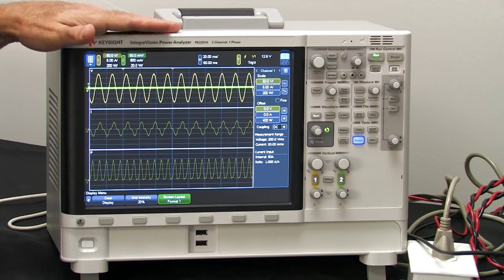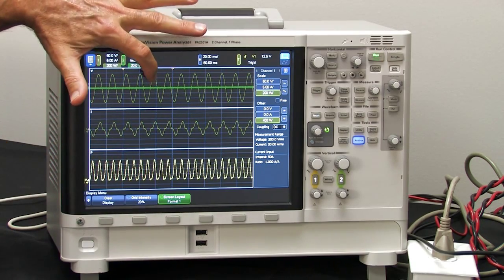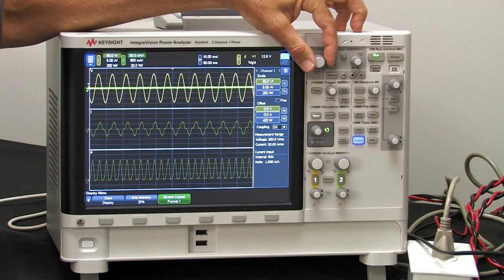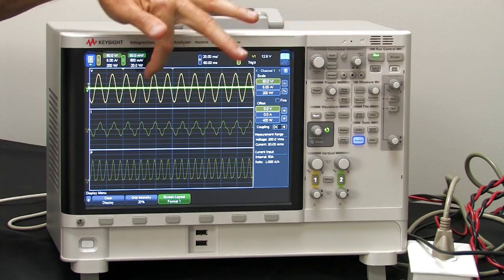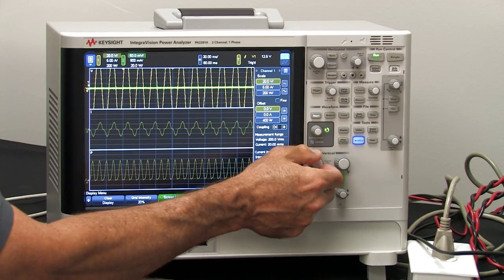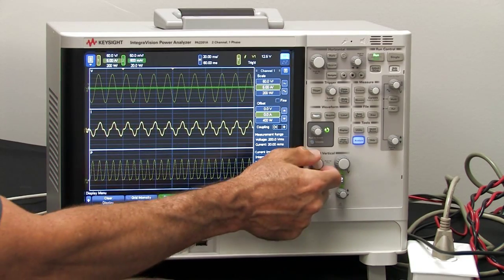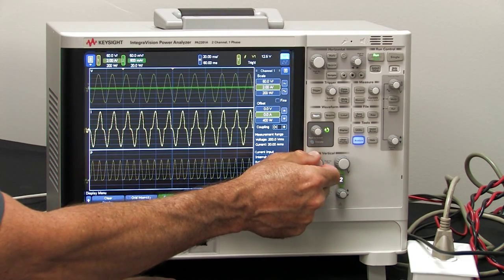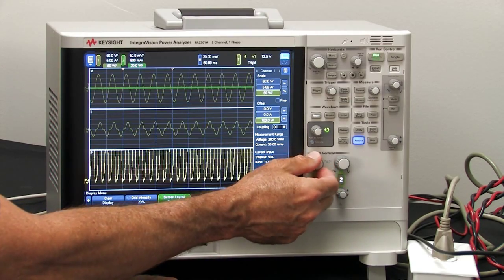This is also a touch screen, so it's very easy to change anything on here. It works just like an oscilloscope. I can change the time per division, I can change the volts per division here very simply. The voltage is up and down. I can switch over to the current and change the amps per division. And of course, I can go to the power and change the power per division here as well.